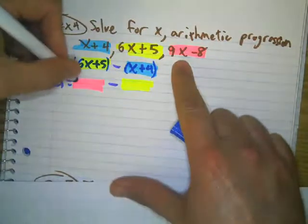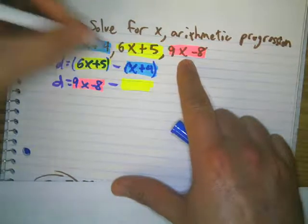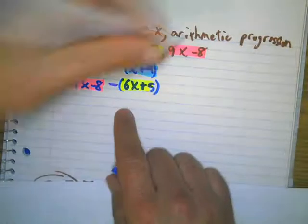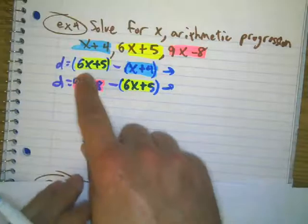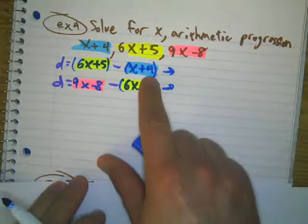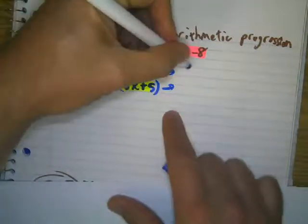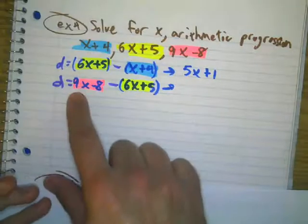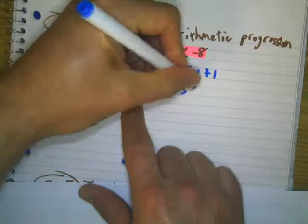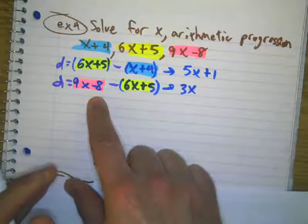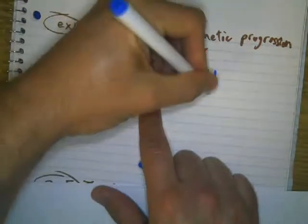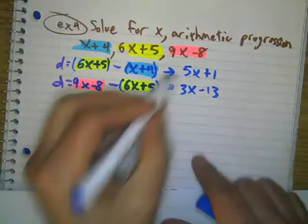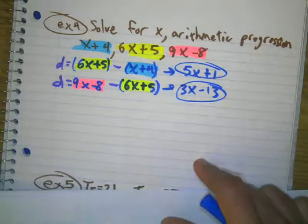And for the other difference: 9x minus 8 minus (6x plus 5). So 6x minus x gives 5x, and 5 minus 4 gives plus 1. And 9x minus 6x gives 3x, and negative 8 minus 5 gives negative 13. Now if d equals this and d equals that, I can set both of these equal to each other.